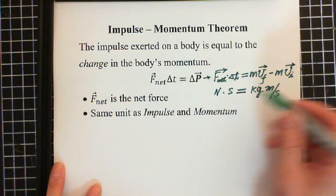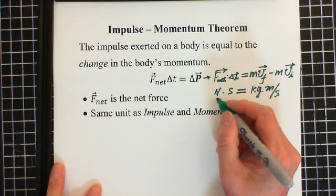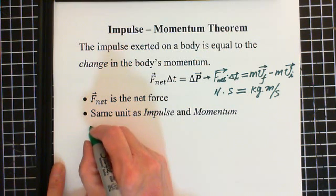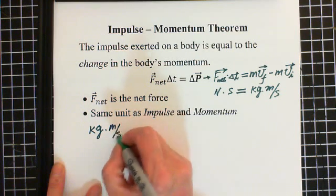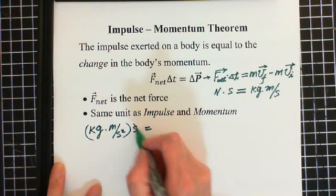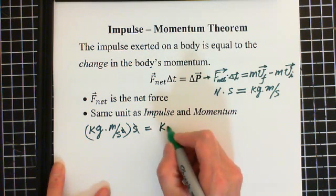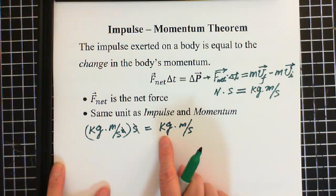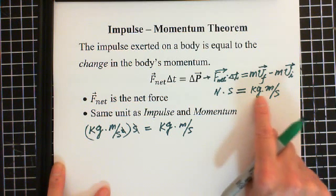How does this work? We can show it using Newton's second law: F equals M times A. So Newton equals mass times acceleration, which is meters per second squared, times seconds. One of the seconds cancels out, giving us kilogram times meter per second. So Newton times second actually equals kilogram times meter per second, which is the change in momentum — the same unit.